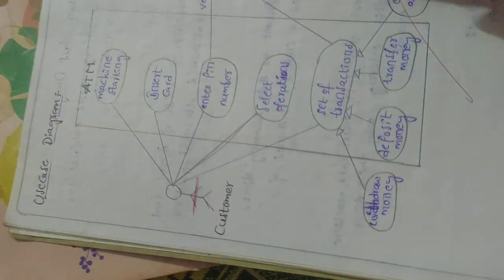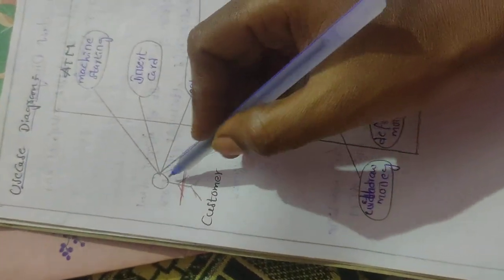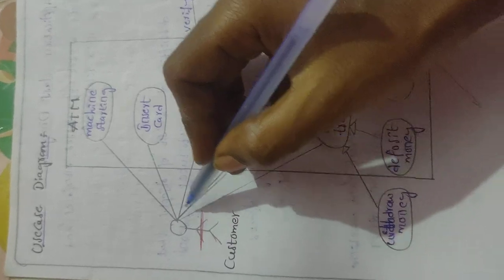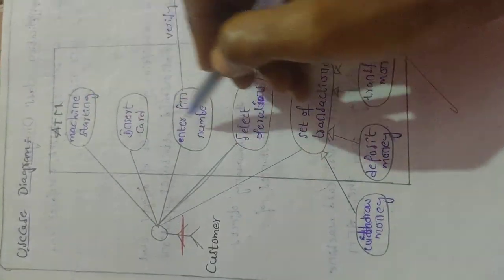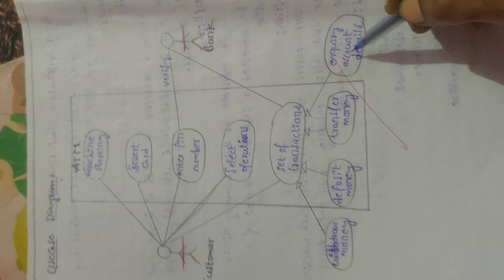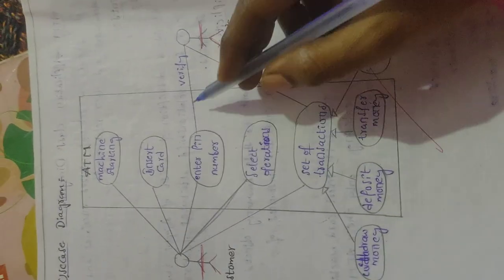For the ATM that is going to be considered a customer going to ATM and he is going to select the operations one by one. He is going to do this operations. This operations are going to be verified by the bank.